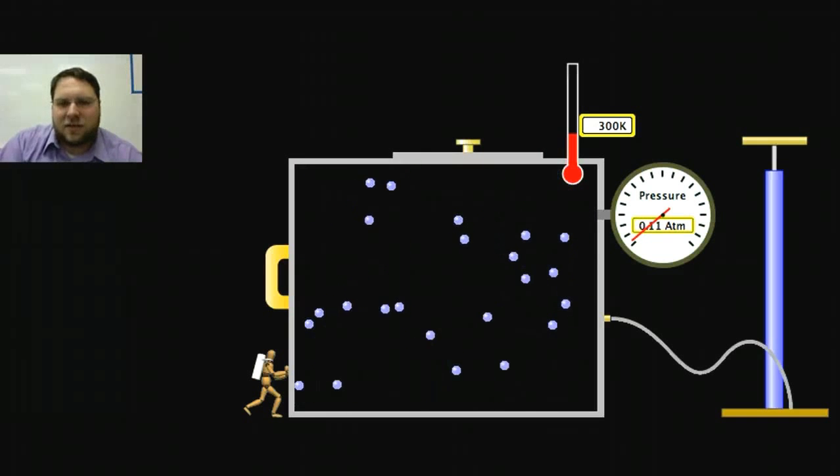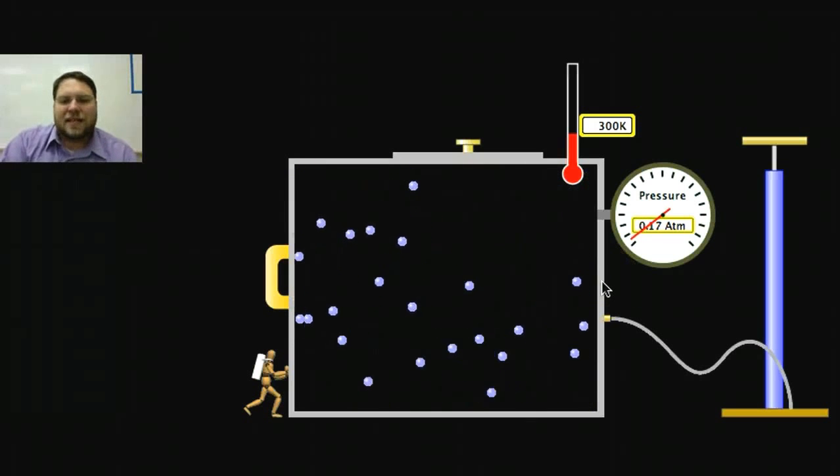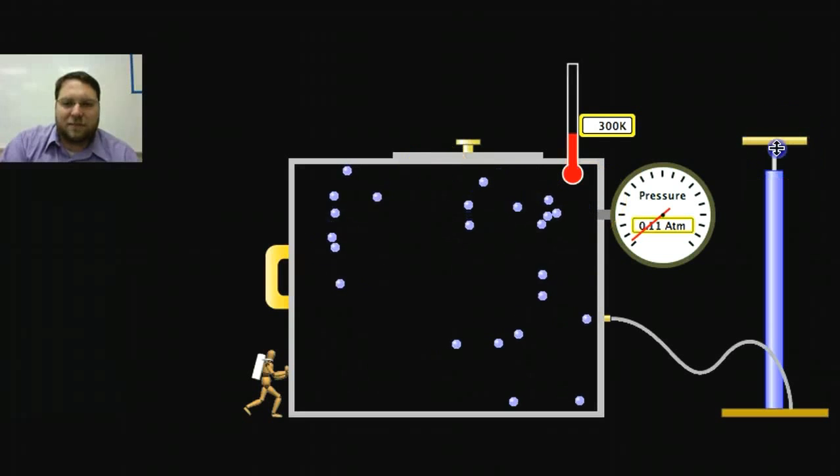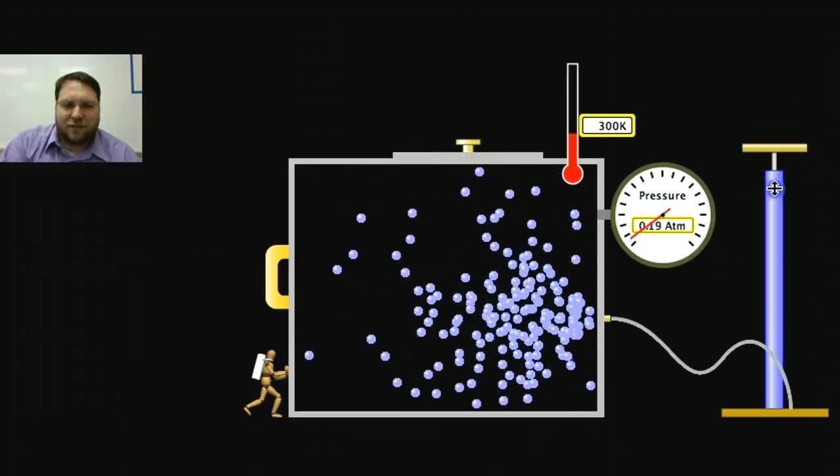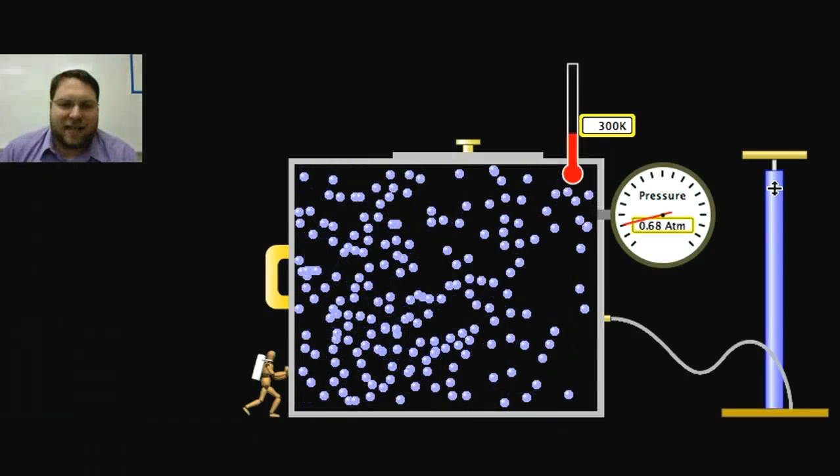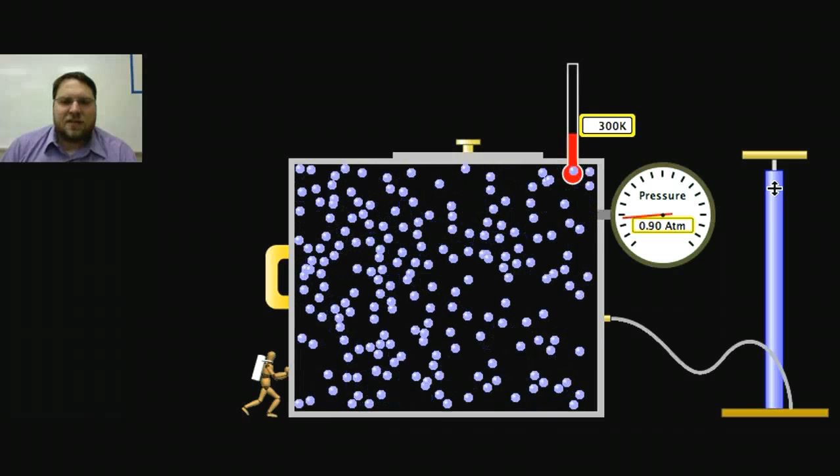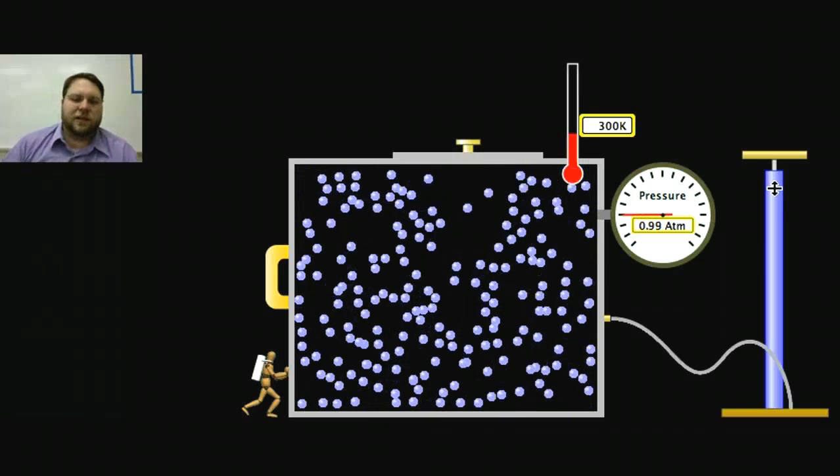So there are a couple ways we could increase the pressure here. If these atoms are moving faster, they bump against the wall with more force, and that's going to increase the pressure. And I can do that by heating them up. Also, if there are more of them, so if I put a bunch more in there, there's more atoms hitting the wall at the same time, and so you can see now the pressure goes up. So the greater the force, the greater the pressure.